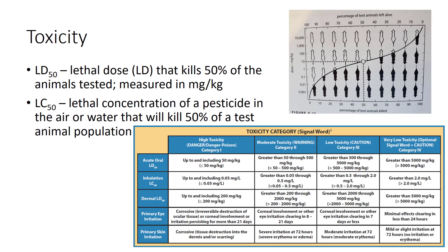The LD50 does not provide information on long-term toxic effects. While a pesticide with a low LD50 can pose a higher risk than one with a large LD50, it can often be used safely provided precautions are taken to protect non-target organisms. Another measurement of toxicity is the lethal concentration of a pesticide in the air or water that will kill 50% of the test animal population. The table shows the toxicity and potential for causing injury to people for the three toxicity categories — danger, warning, and caution.